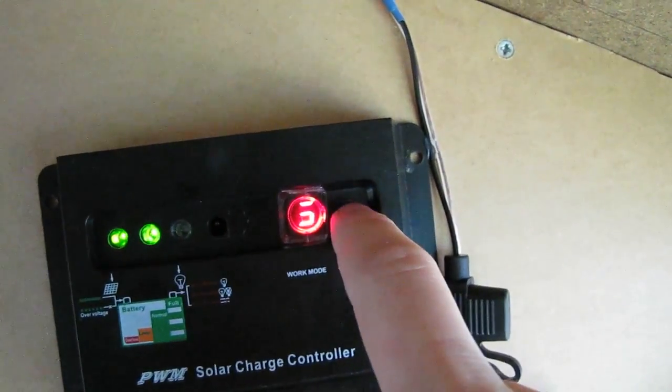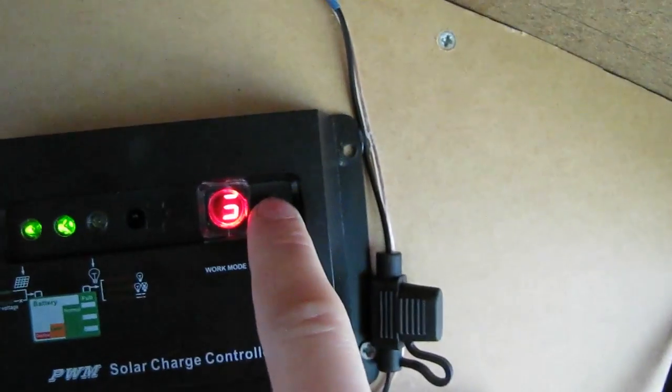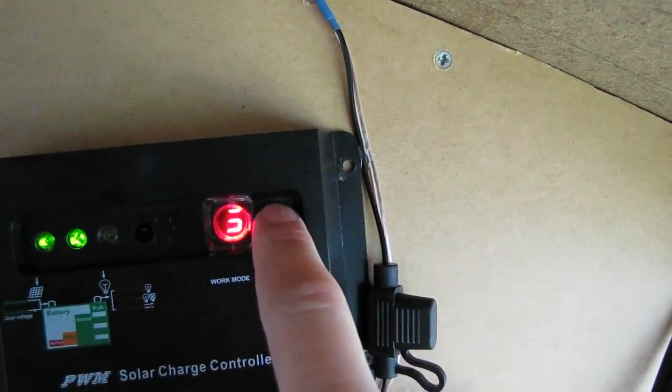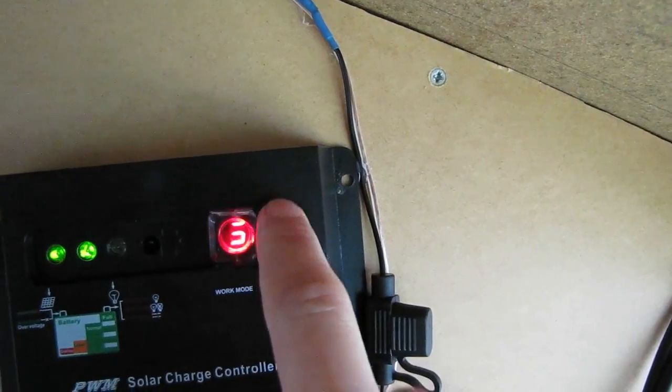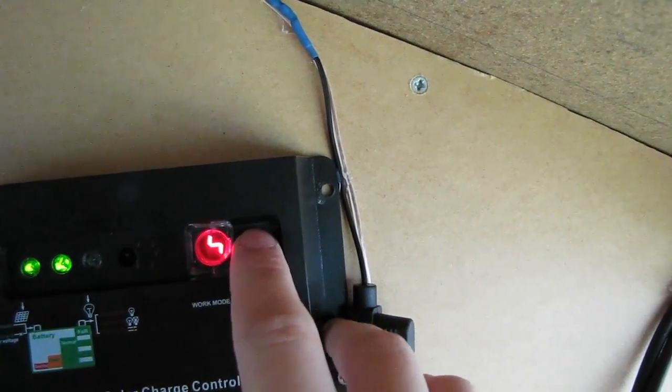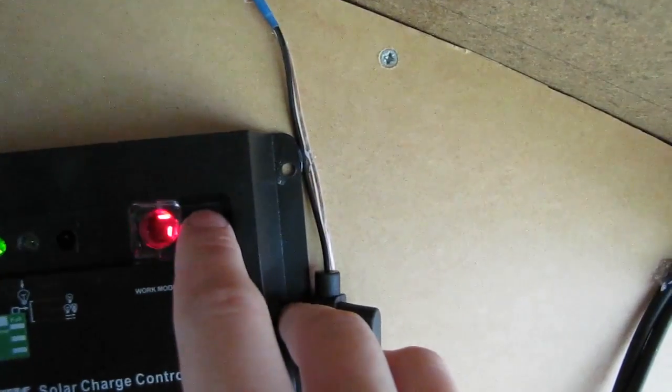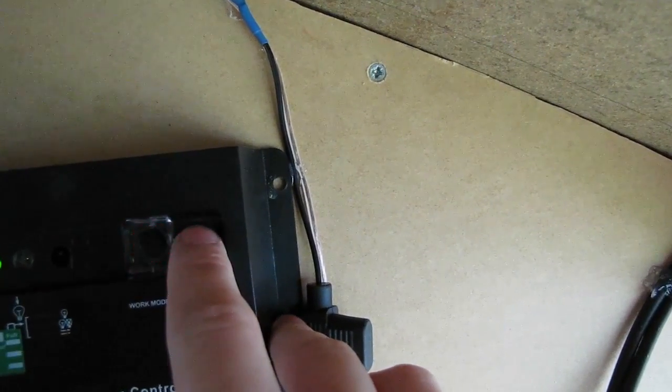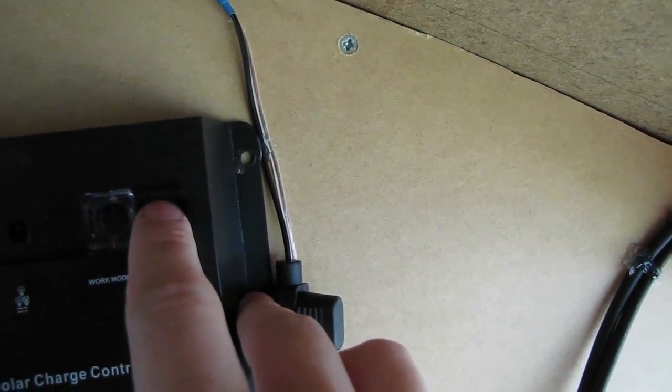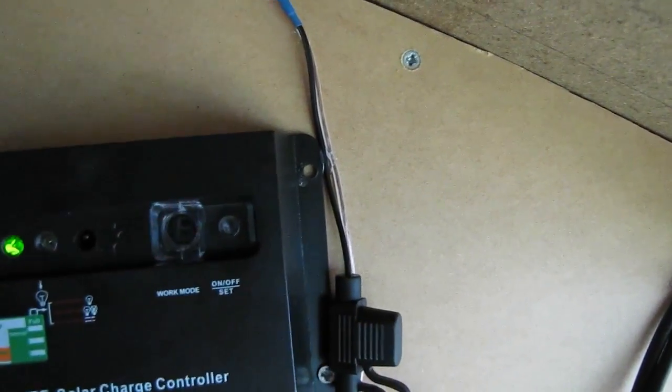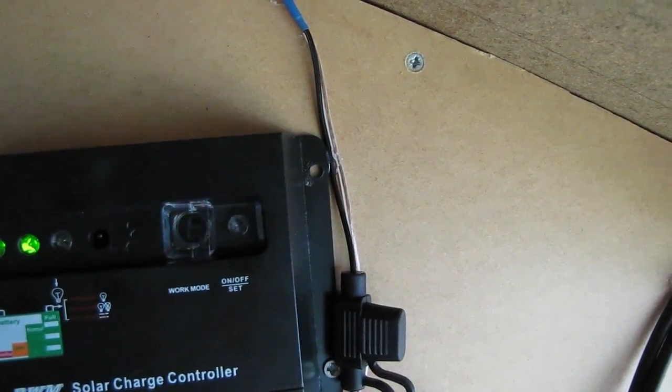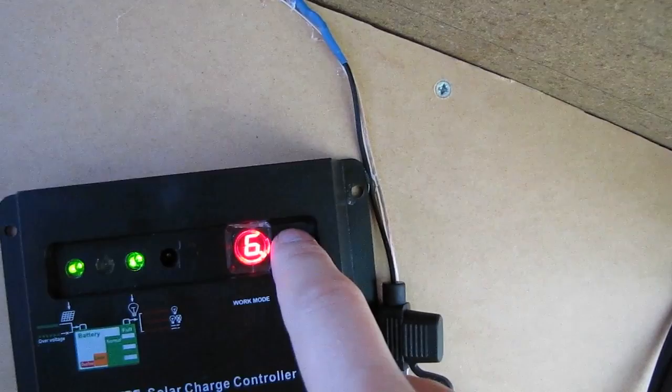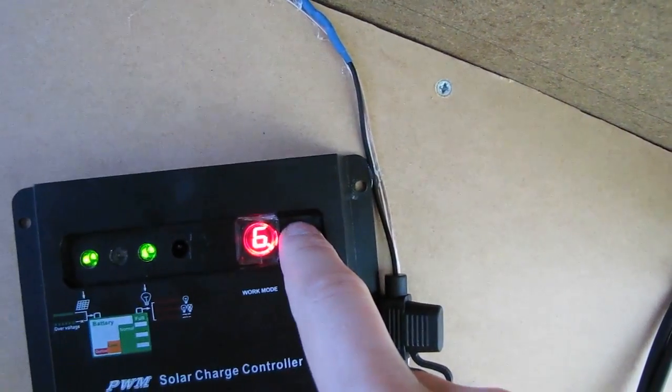So if you just want to use this as a switch to turn the lights on and off, which is the way I've got it set at the moment, you just hold this down again until it starts blinking. Then scroll through until you get to number 6 with the decimal point. Just leave it and it will stop blinking. And now it's set to just be a switch that you can turn on and off.